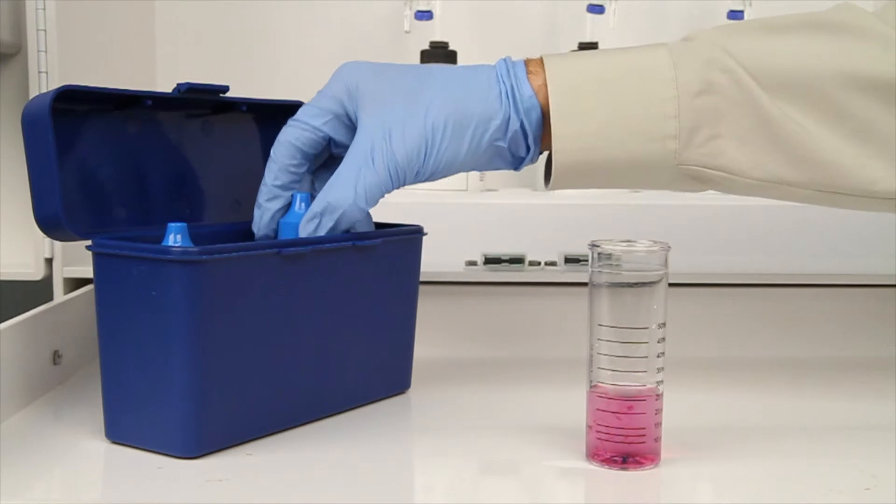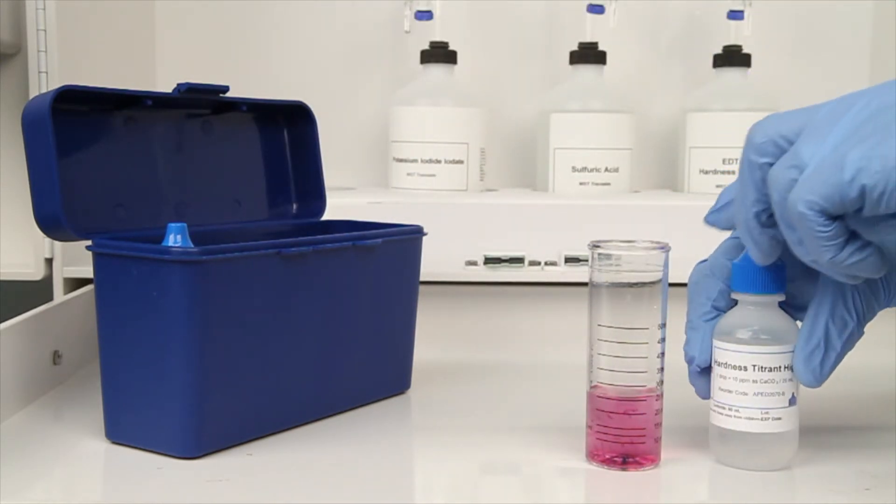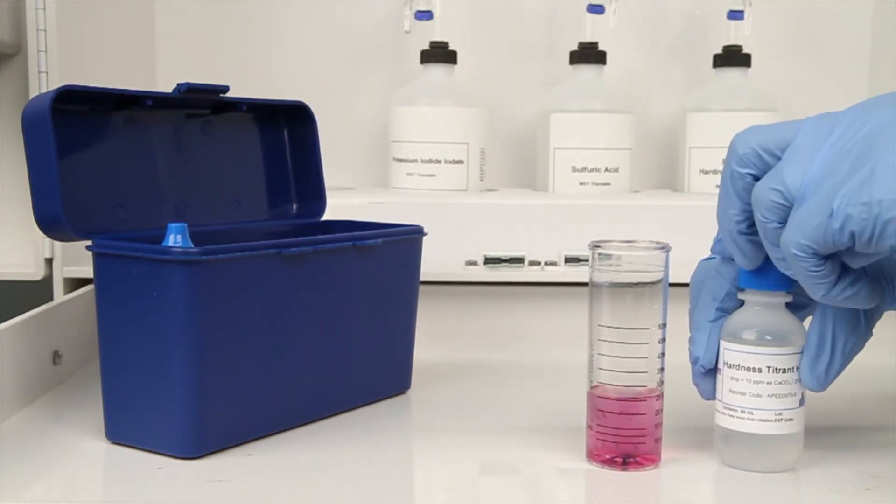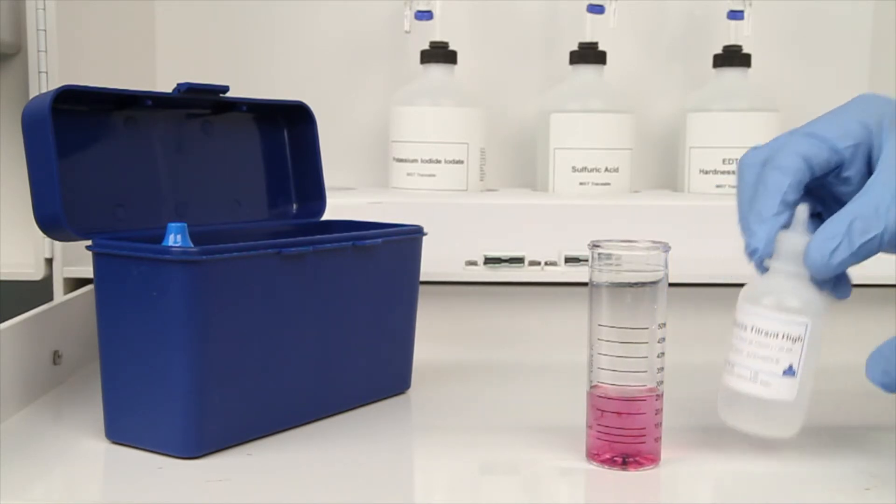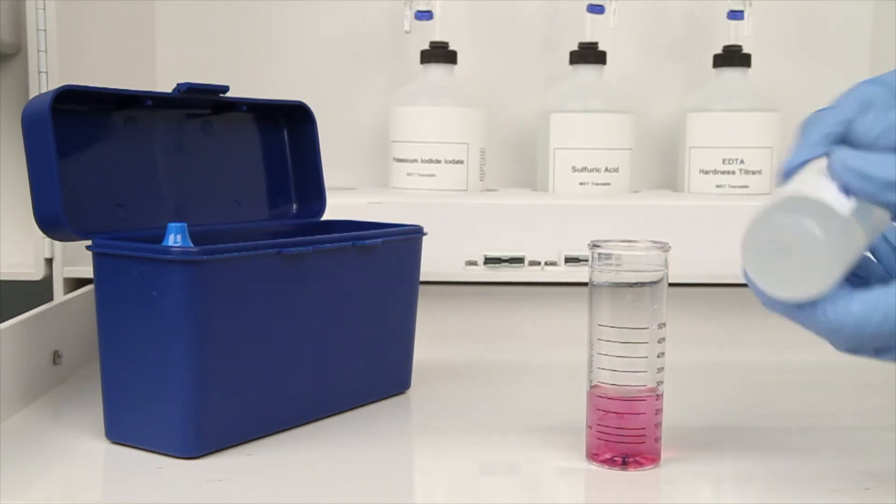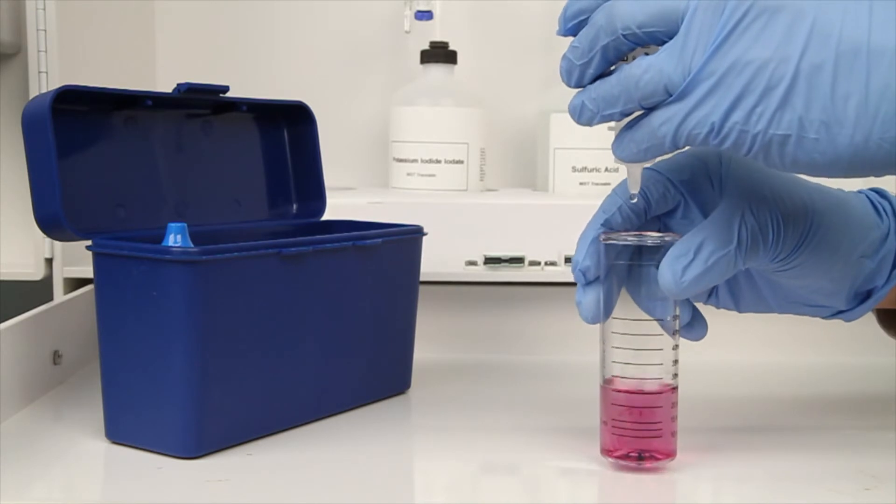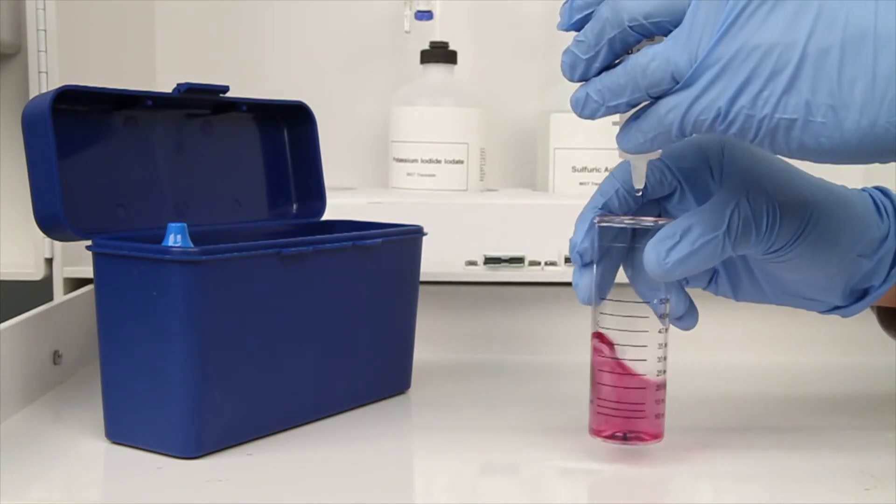The next step according to the Endpoint ID procedure is to perform the titration. Each bottle of titrant is labeled with the equivalency and sample size it was manufactured for. It's important to make sure you have the proper titrant and the proper sample size for this titration.